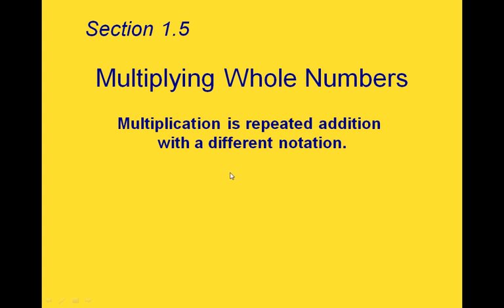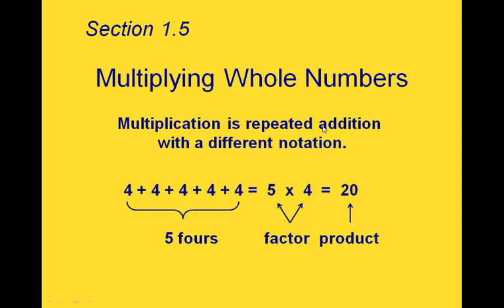This is section 1.5 about multiplying whole numbers. Multiplication is just repeated addition with a different notation. For example, if we add 4 to itself 5 times in a row, that's the same as multiplying 4 times 5. Either way, we get 20 as our answer.